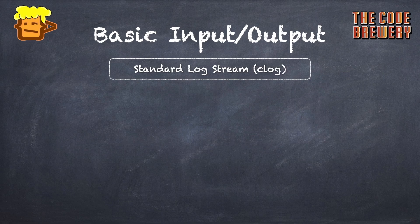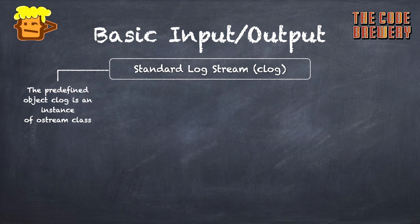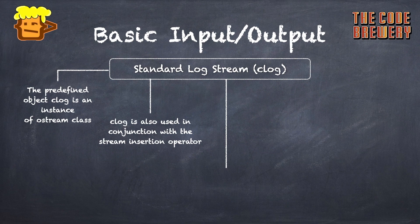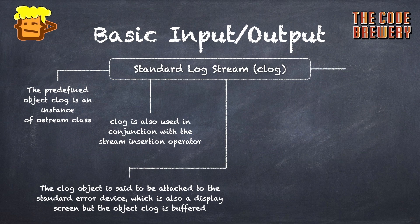If we talk about the standard log stream clog: the predefined object clog is an instance of the ostream class. The clog object is attached to the standard error device, which is also a display screen, but clog is buffered. This means each insertion to clog could cause its output to be held in a buffer until the buffer is filled or flushed. You may not see any difference between cout, cerr, and clog with small examples.